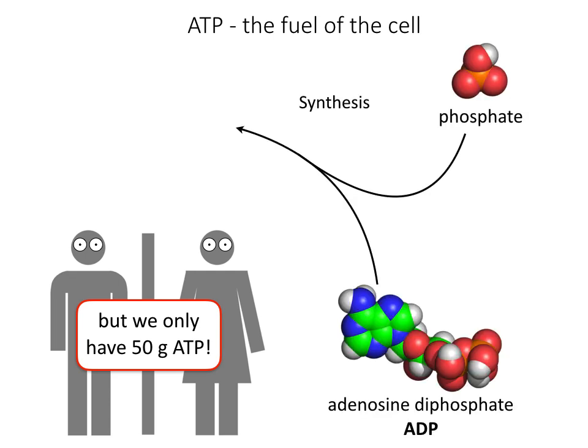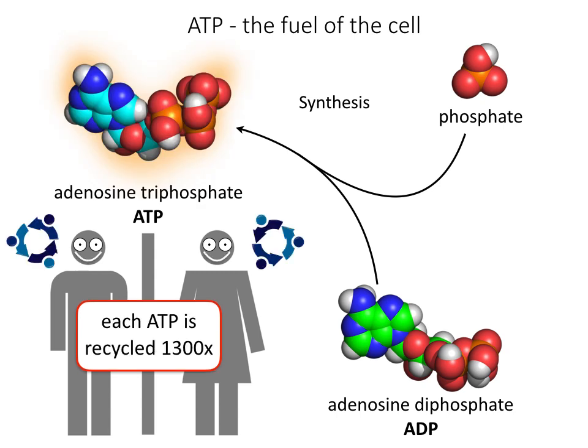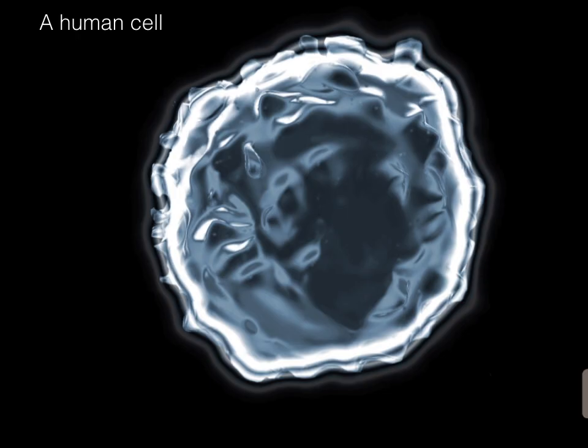In a process called ATP synthesis, ADP and phosphate are fused together again to make ATP. In fact, we recycle each ATP molecule 1,300 times a day. But where does this happen? For that we need to look more closely at a human cell, as each human cell has to synthesize its own ATP supply.